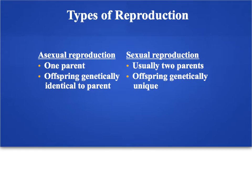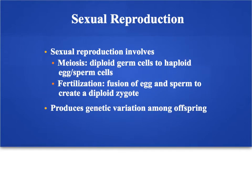So meiosis, the second half of our unit, is involved in sexual reproduction. In sexual reproduction, we have two main steps. The first step is meiosis, and here we're going to be taking a diploid germ cell and creating haploid egg and sperm cells. Right now you're probably saying 'diploid' and 'haploid' — I don't know what those mean.